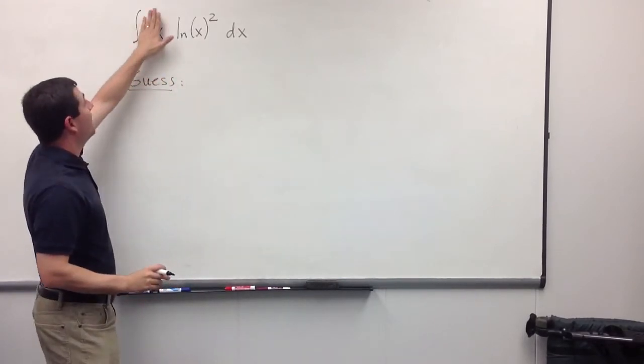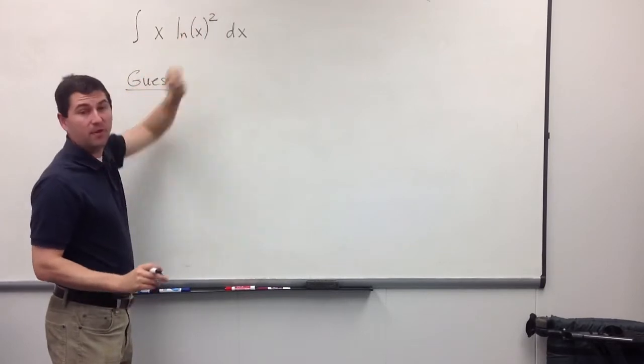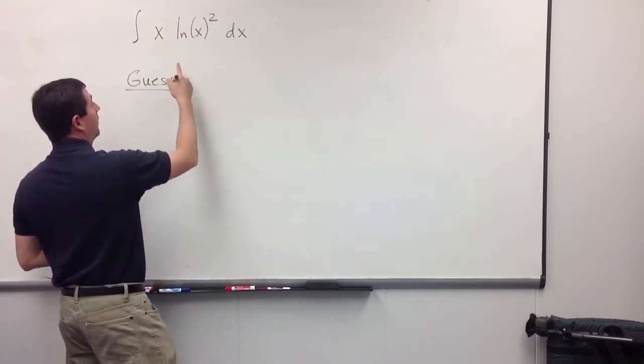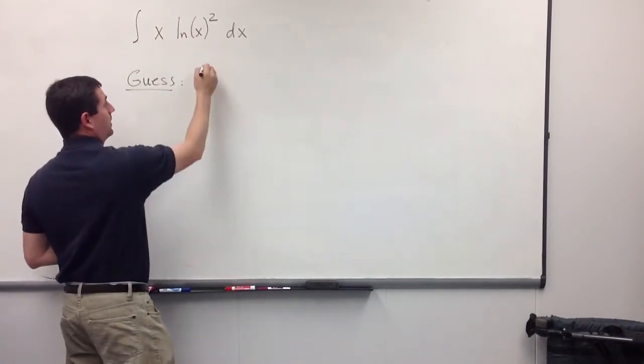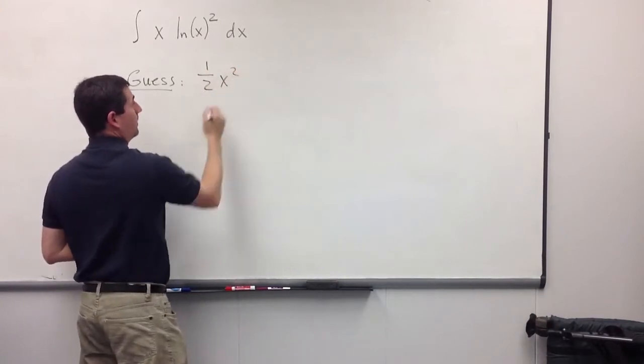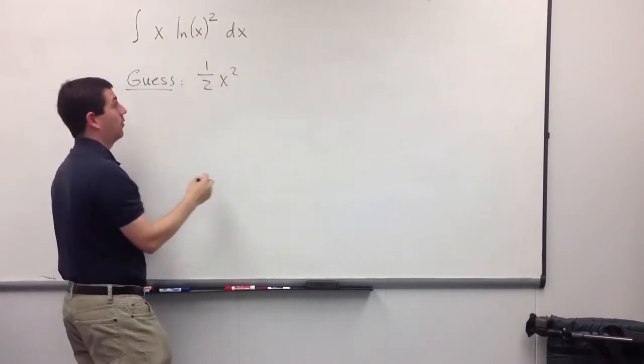Well, find an antiderivative for the polynomial in x, and just keep the natural log where it is. So, an antiderivative for x is going to be one-half x squared. And then we just copy the power of the log.